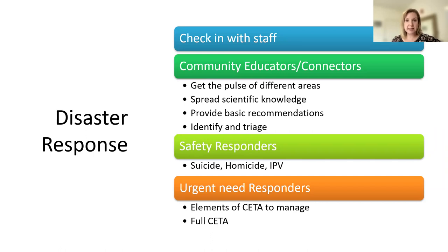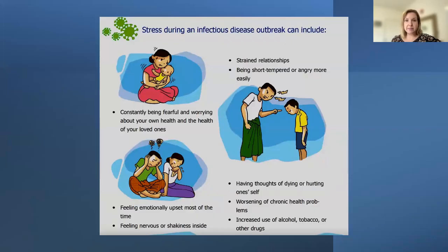The other way that we pivoted was to create a CETA telehealth manual, so that all of our interventions were available over Zoom, phone, or any way people could connect during the pandemic. From our work in Myanmar, some of the handouts were sent out — looking at what stress during a pandemic can look like, what's normal, and then what would be something where somebody would need to reach out for more help. Other handouts covered things you can do to take care of yourself: setting schedules, getting into a routine, making sure you exercise, and other self-care tips.